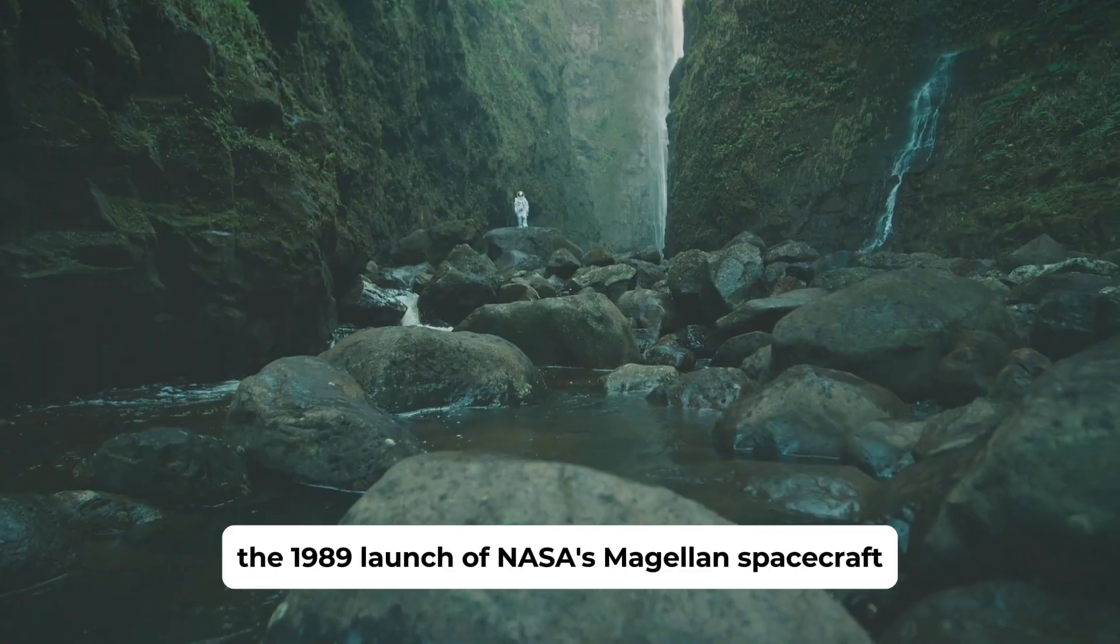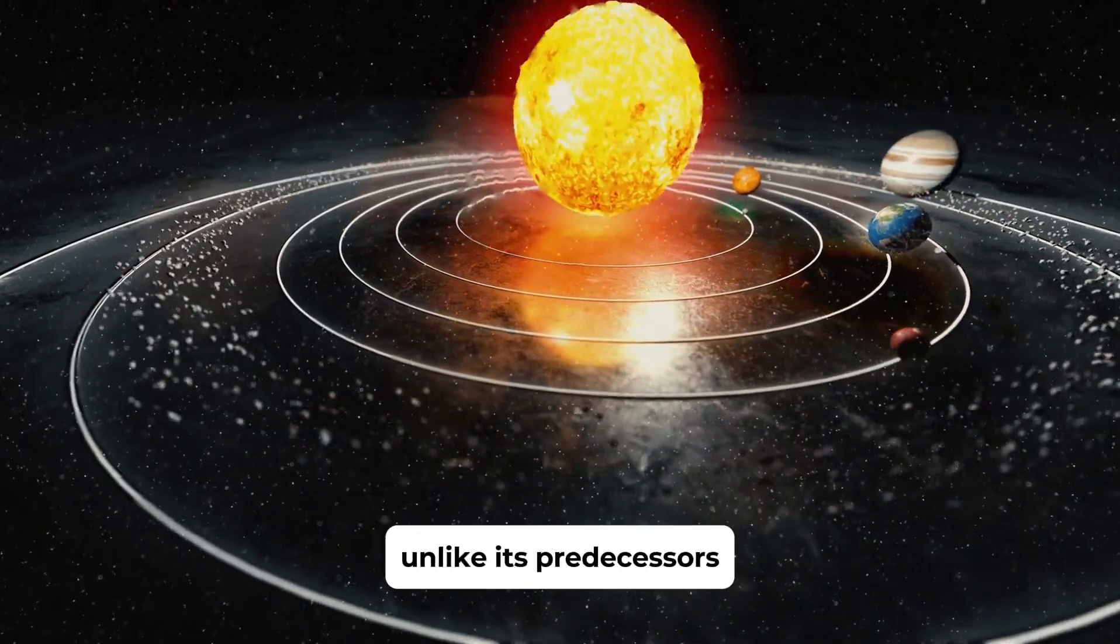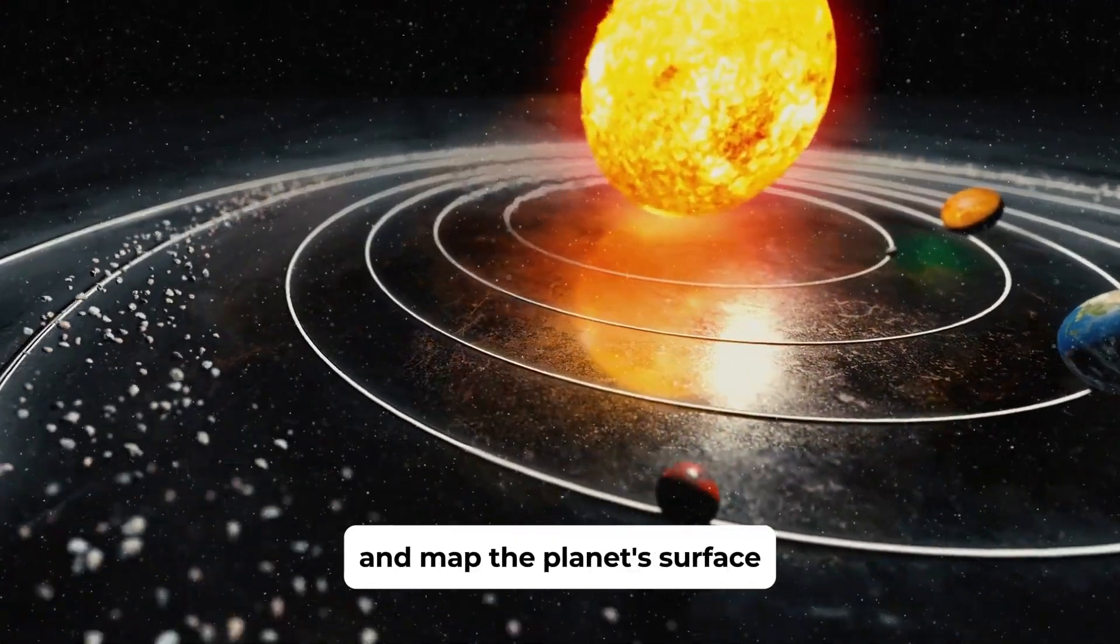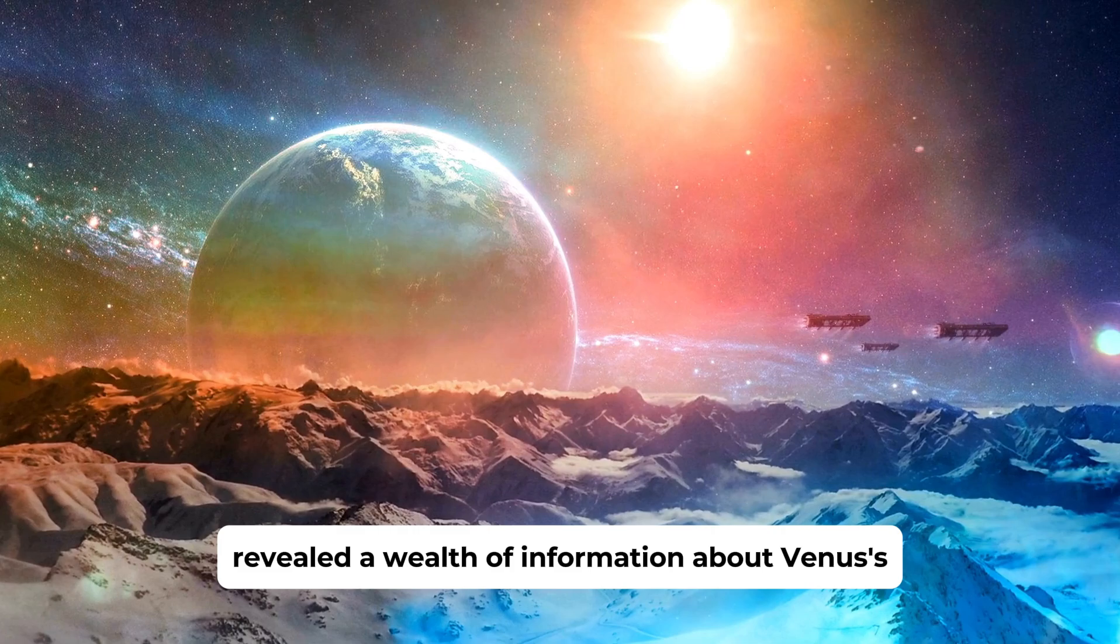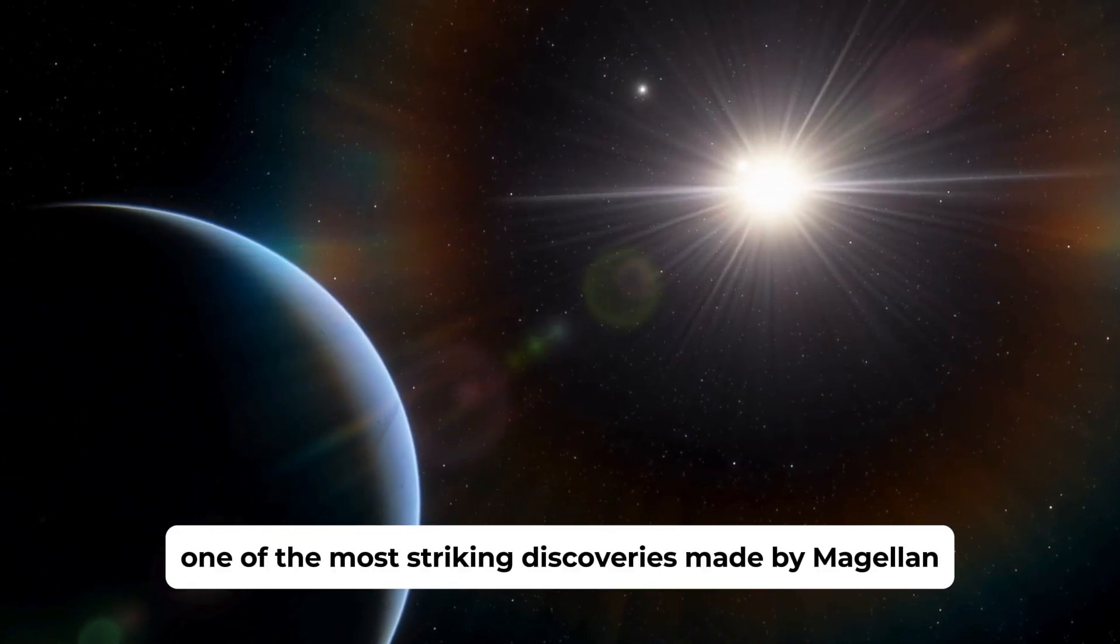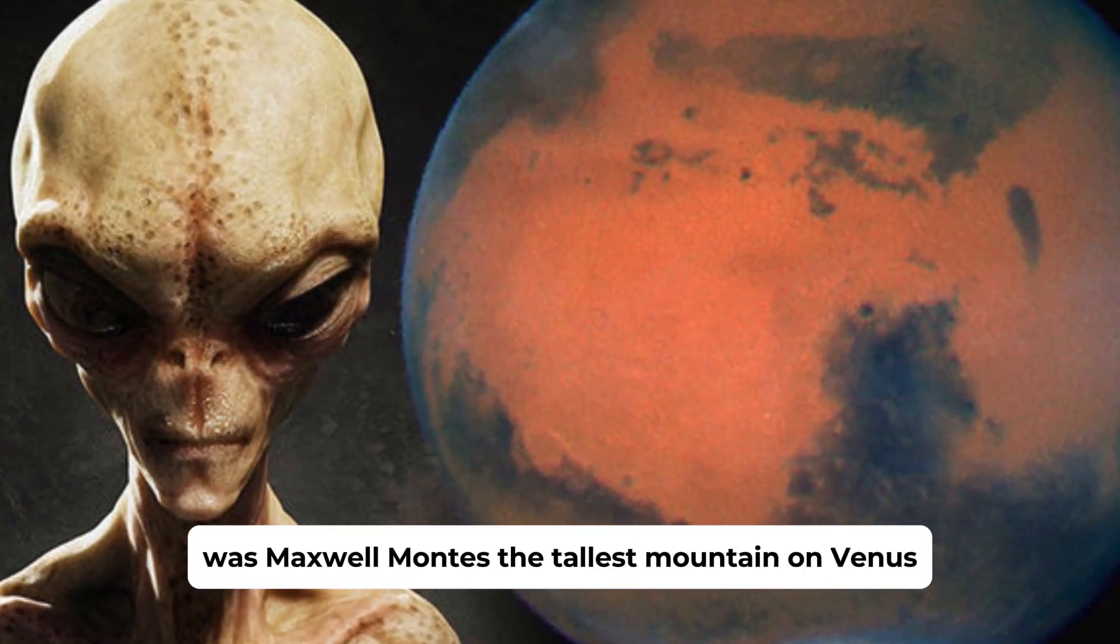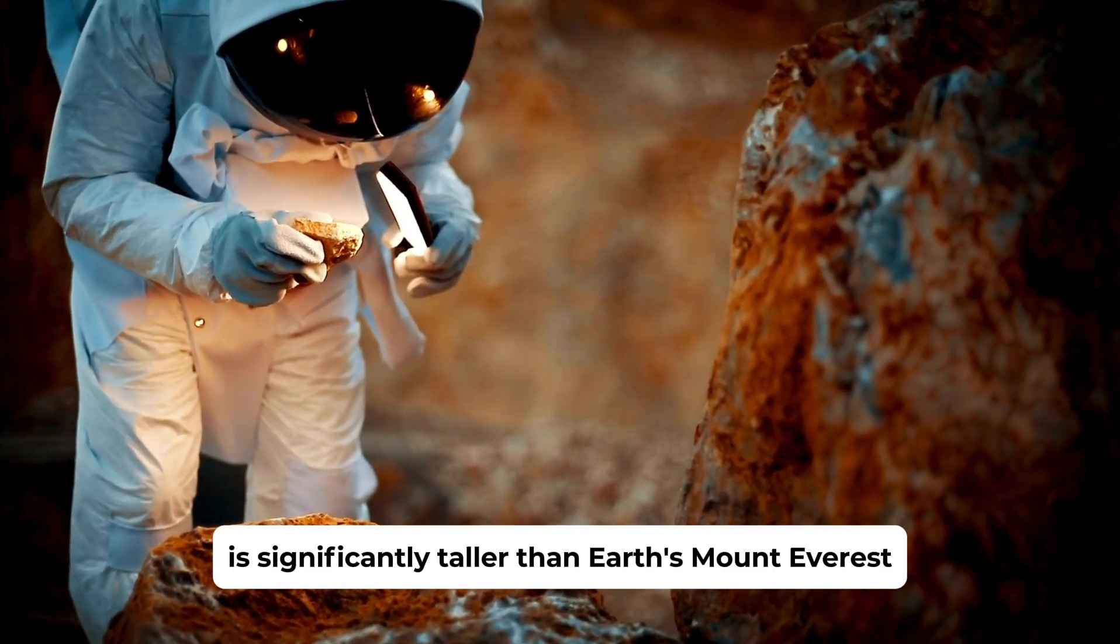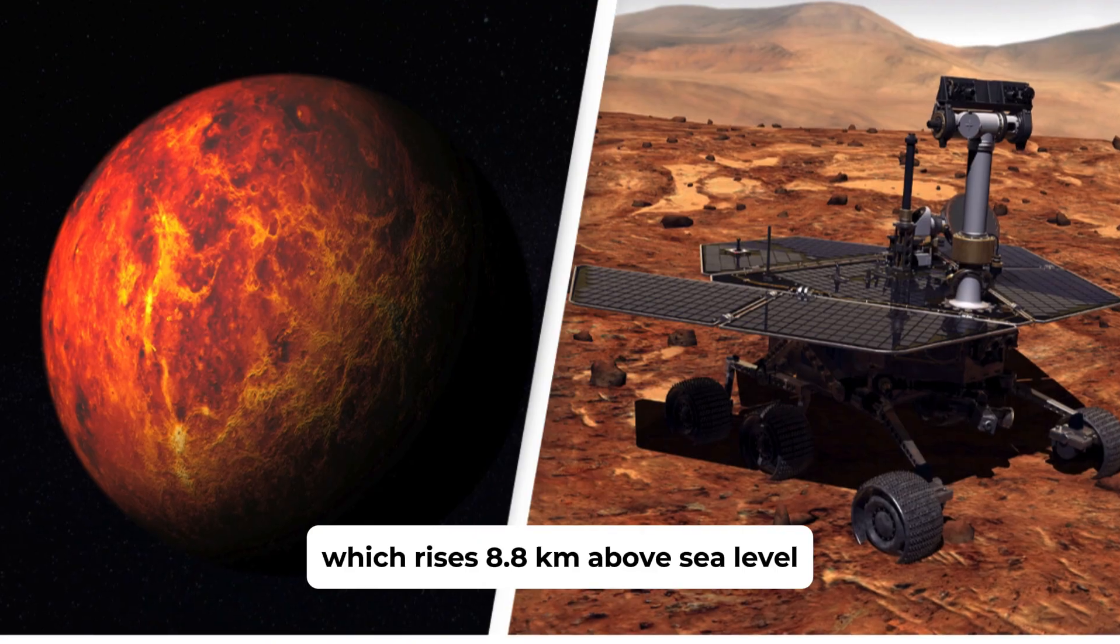The 1989 launch of NASA's Magellan spacecraft marked a new era in Venus exploration. Unlike its predecessors, Magellan used radar to peer through Venus's thick cloud cover and map the planet's surface. One of the most striking discoveries made by Magellan was Maxwell Montes, the tallest mountain on Venus. Standing at 11 kilometers high, Maxwell Montes is significantly taller than Earth's Mount Everest, which rises 8.8 kilometers above sea level.